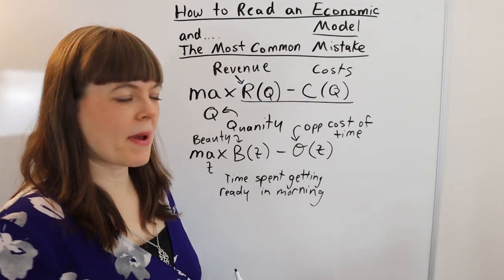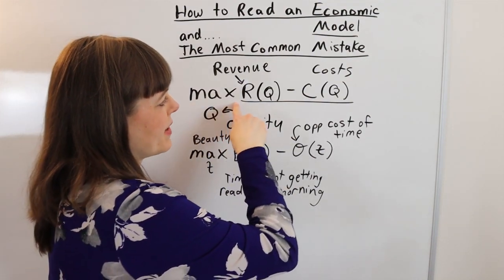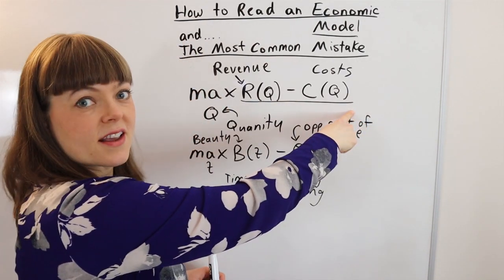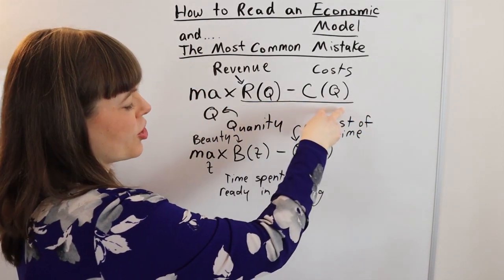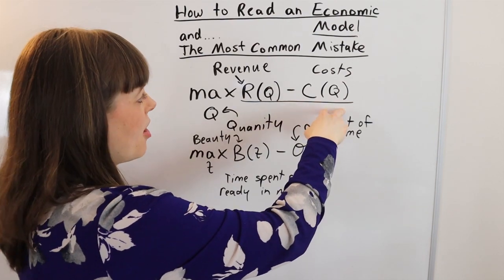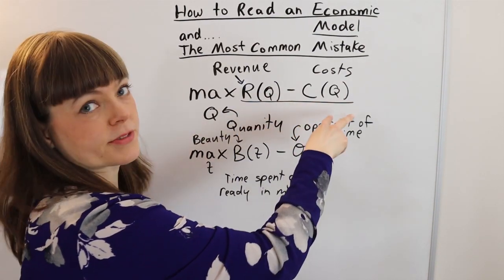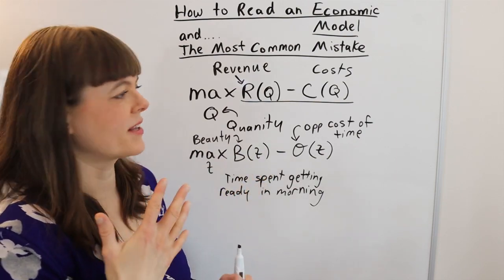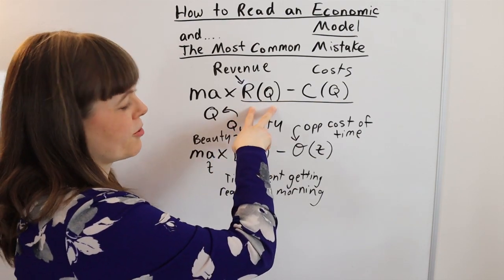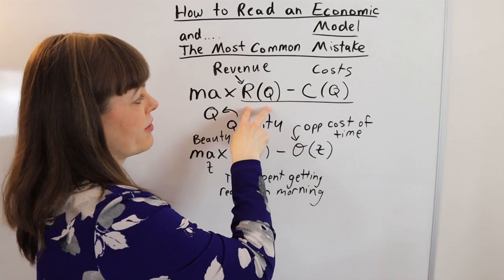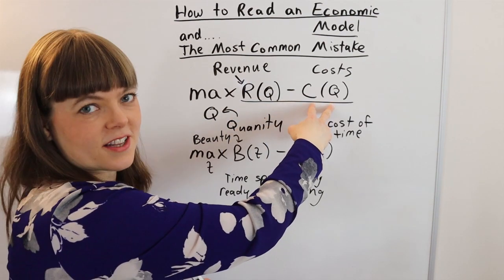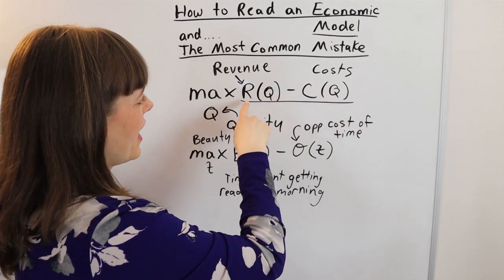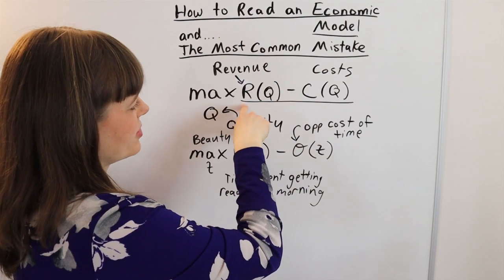So the next step after you figured out that you're maximizing the objective function is to sort of figure out what terms in the objective function are benefits and what terms are costs. Now, these two models I have on the board are actually pretty simple. We've got the benefit if you're maximizing profit is revenue. The cost is just cost to the firm financially.